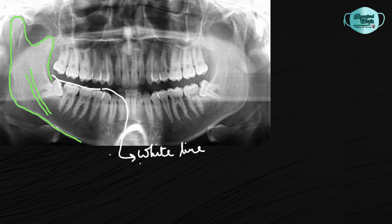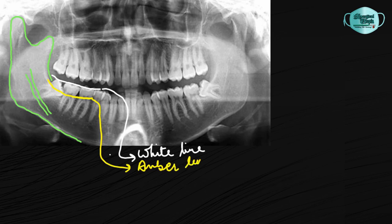The second line is the amber line, which extends from the alveolar bone in the posterior region to the interdental septum of the first and second molars. The third line — the red line — is dropped perpendicular from the amber line to the CEJ level on the mesial side.